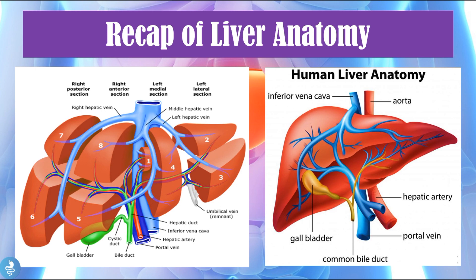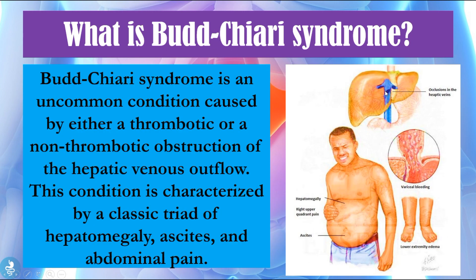Coming back to our first slide, we see occlusions in the hepatic venous outflow. The patient will suffer hepatomegaly because if that blood is blocked it has nowhere to go — it's going to saturate the venous system and without proper blood flow the liver starts to swell. We're also going to have ascites because all that fluid is going to build up in the abdomen, and then we'll have the onset of pain due to the fluid and the enlarged liver. These are the classic three symptoms: hepatomegaly, ascites and abdominal pain.